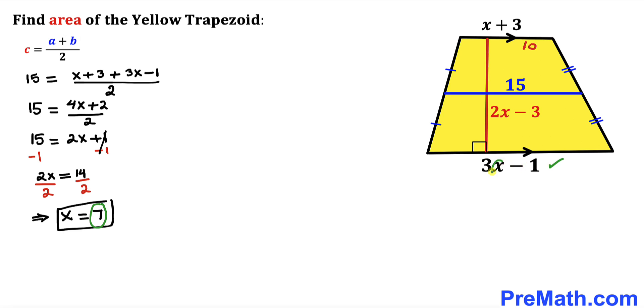And now let's focus on this other base. I'm going to replace x by 7 over here as well. So this is going to become 3 times 7 equals to 21. Take away 1 equals to 20. So therefore this base turns out to be 20 units.